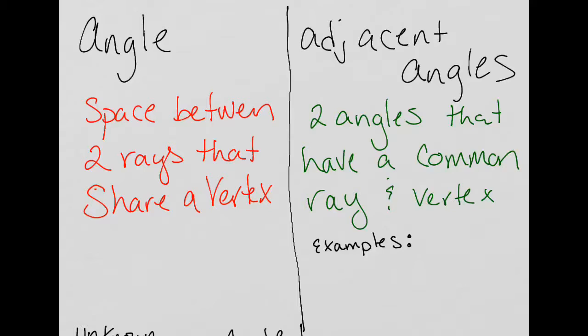So the first one is the most basic, what is an angle? An angle is the space in between two rays that share a vertex. A vertex is just a point. So here's a point, and I'm going to put off two rays from that same point. An angle is actually the space in between it.